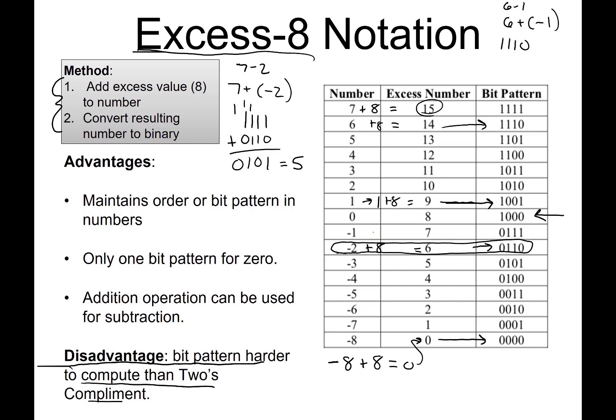Negative 1 is here, so negative 1 plus 8 equals 7. So the bit pattern for negative 1 is 0111.